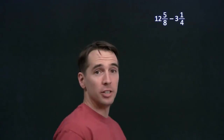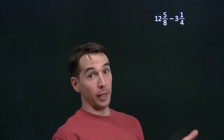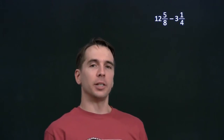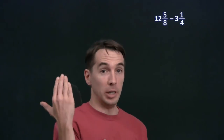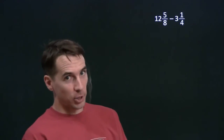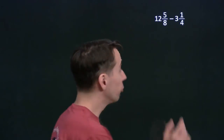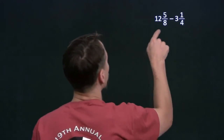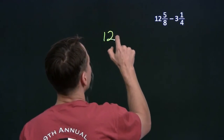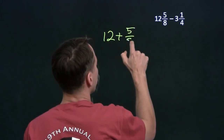We've got some mixed number subtraction here. Now it looks an awful lot like mixed number addition, and we know how to handle mixed number addition. We split the mixed numbers into integer parts and fractional parts. When I find a strategy that works, I like to keep using it. So that's what we're going to start with here — we're going to take each of these mixed numbers and split them into an integer part and a fractional part.